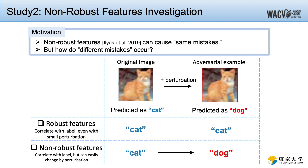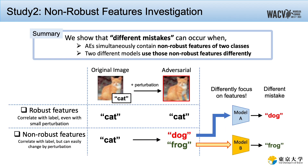Then the question is: how do different mistakes occur? We show that different mistakes can occur when AEs simultaneously contain non-robust features of two classes, and two different models use those non-robust features differently. Suppose a cat image was manipulated and contains non-robust features of dog and frog. When model A looks at the dog features more and model B looks at the frog features more, they could be misled to different classes of dog and frog.